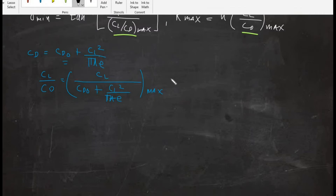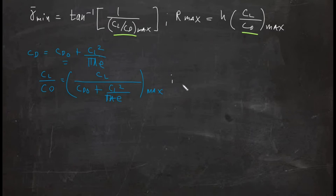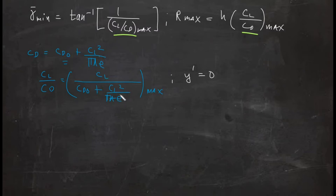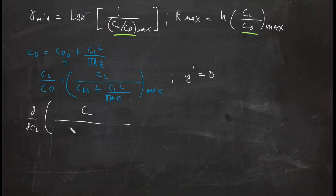We do that by applying what we learned in differential calculus: getting the first derivative and setting it to zero. Since CL is our independent variable, we will get the derivative of the ratio CL over the quantity CD zero plus CL squared over pi·A·e, with respect to CL.